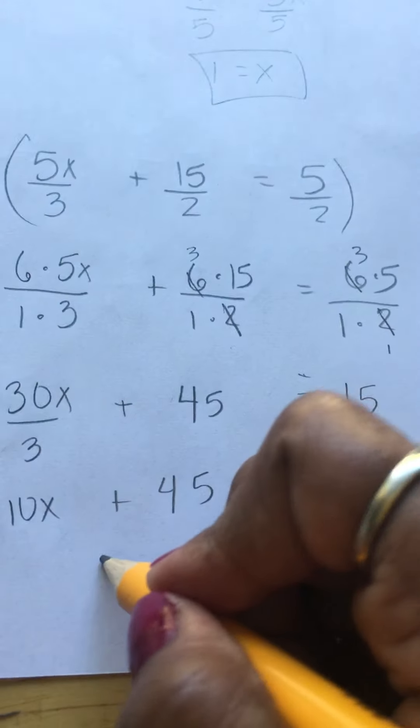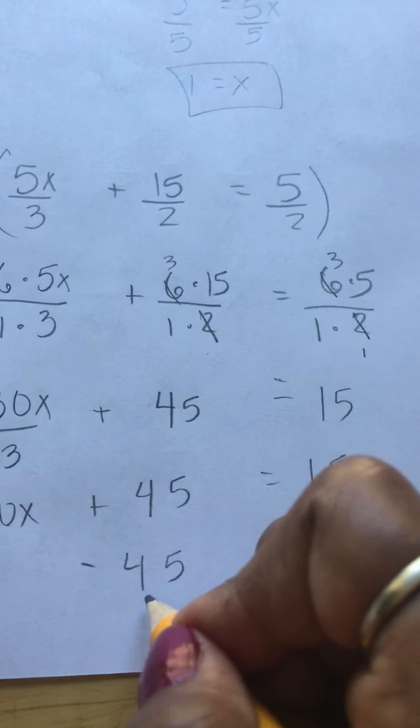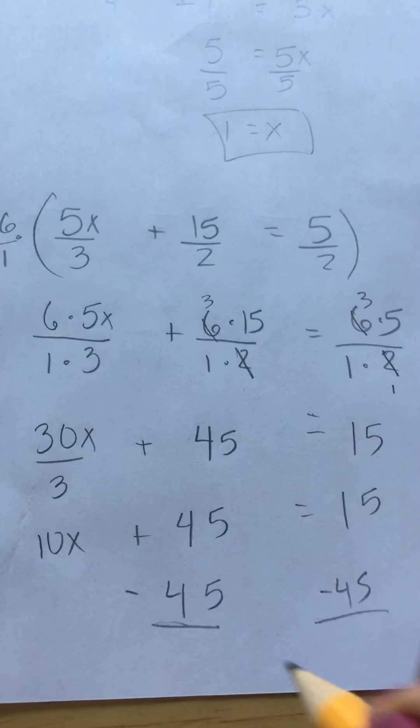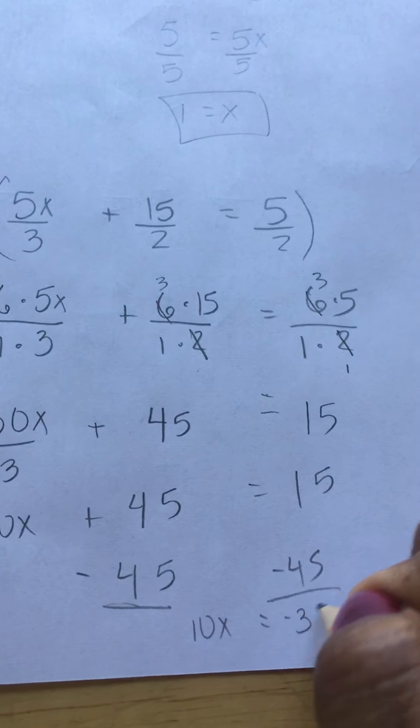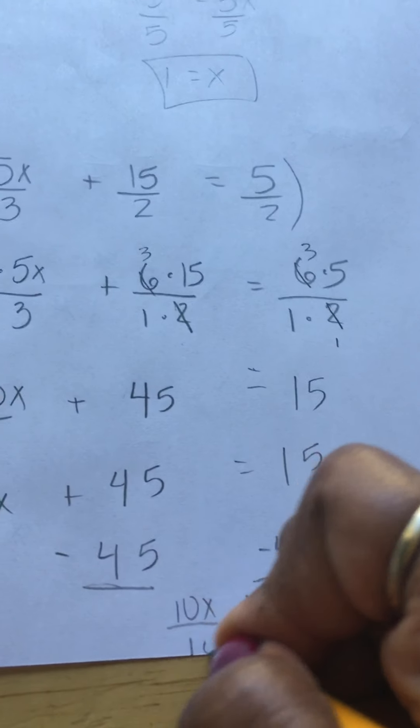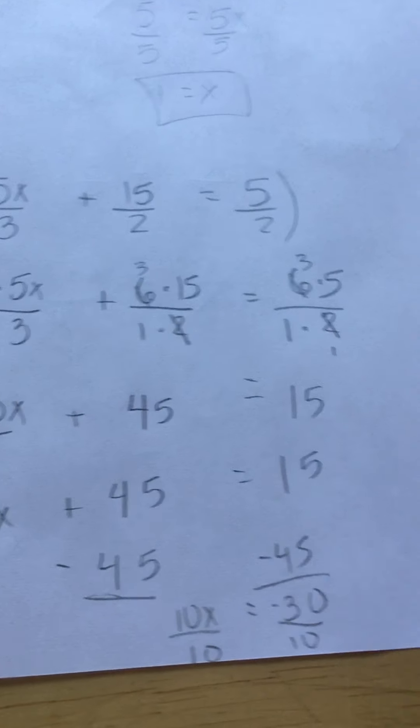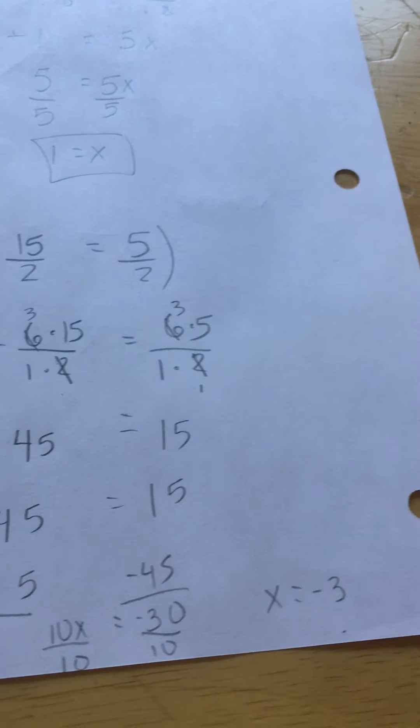Take the opposite, negative 45, negative 45. And we have 10x equals negative 30. Divide by 10. I'm going to run out of room in a minute. x equals negative 3. Alright, thank you.